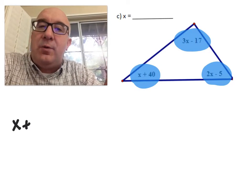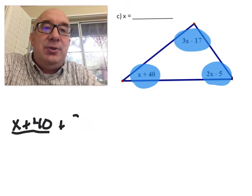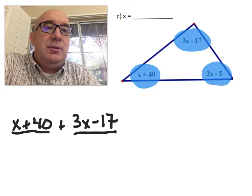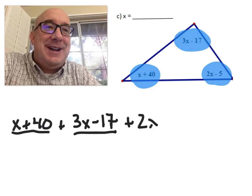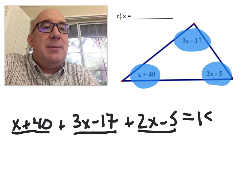x plus 40, that angle, added to the next angle, 3x minus 17, those two, and the third angle, 2x minus 5, those all have to sum to 180.